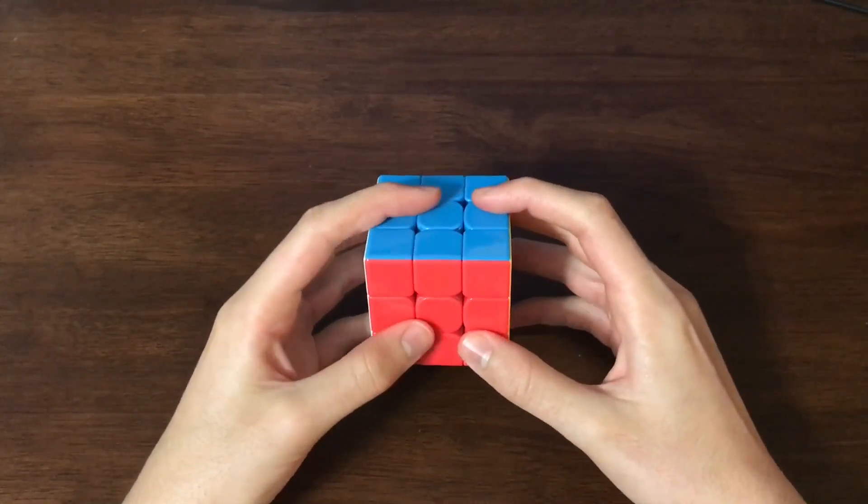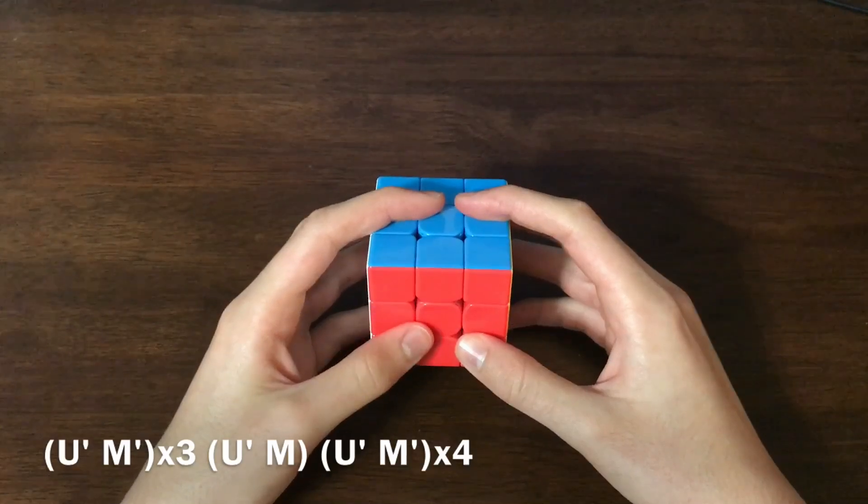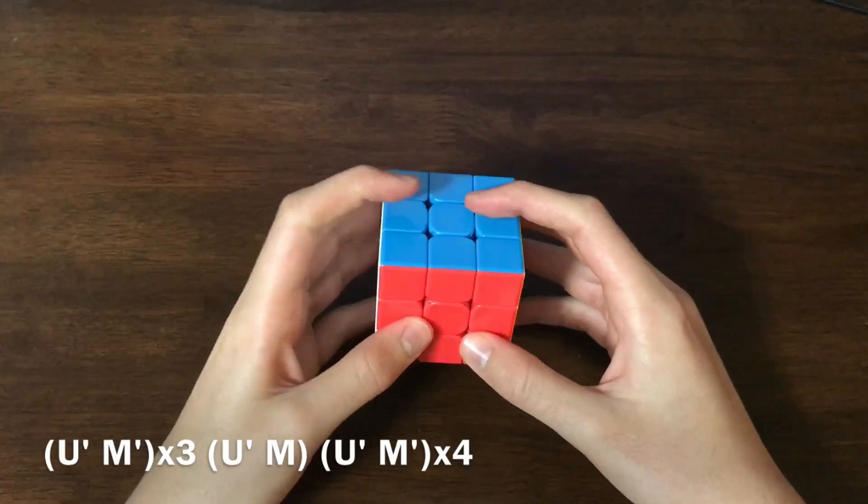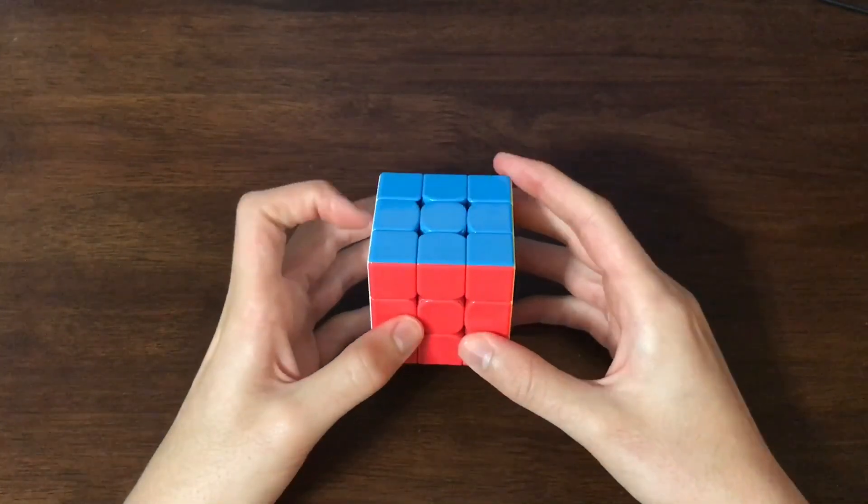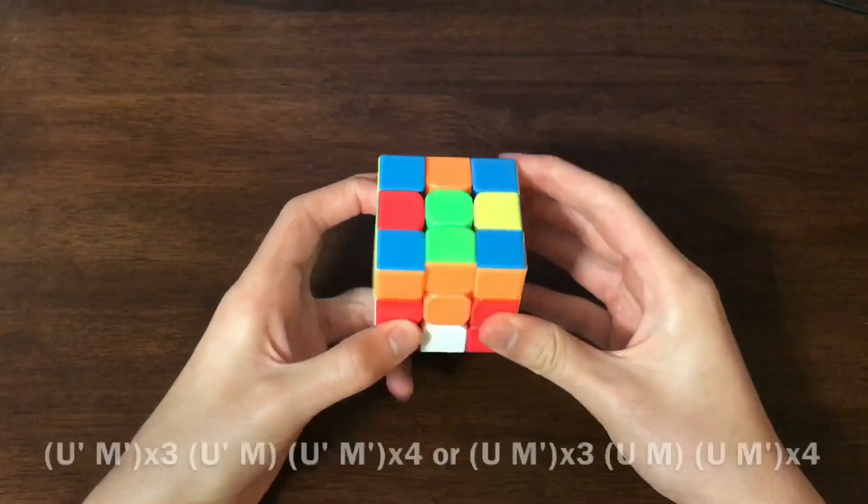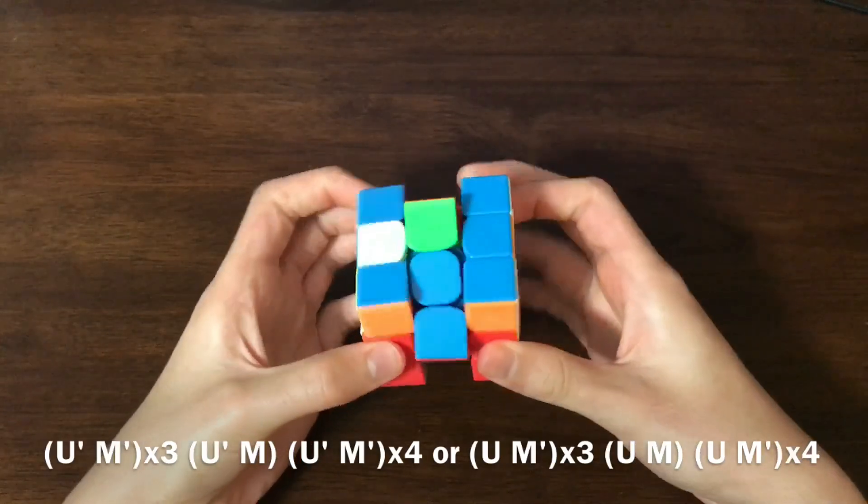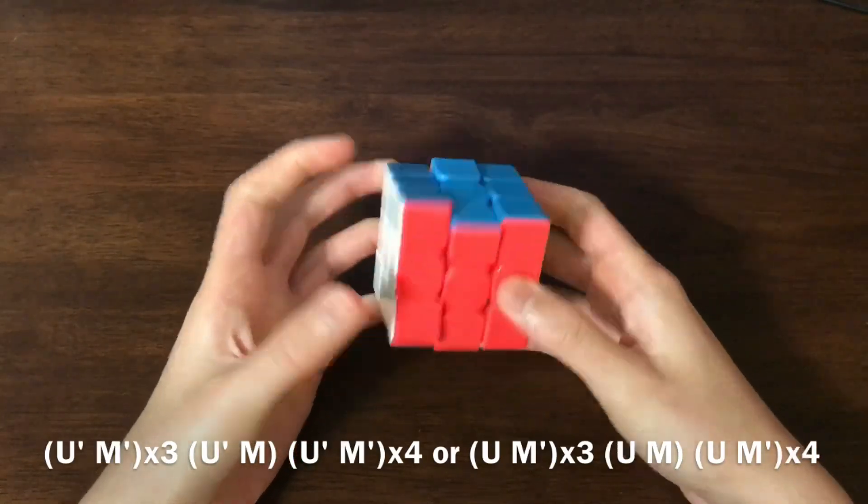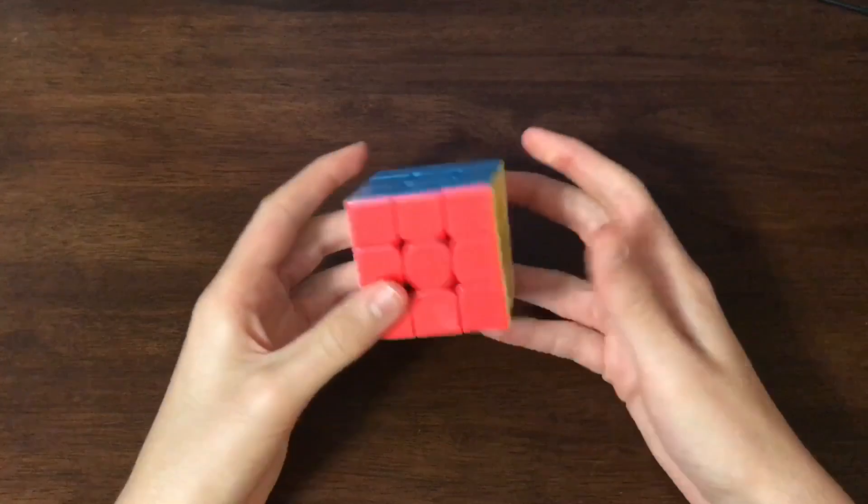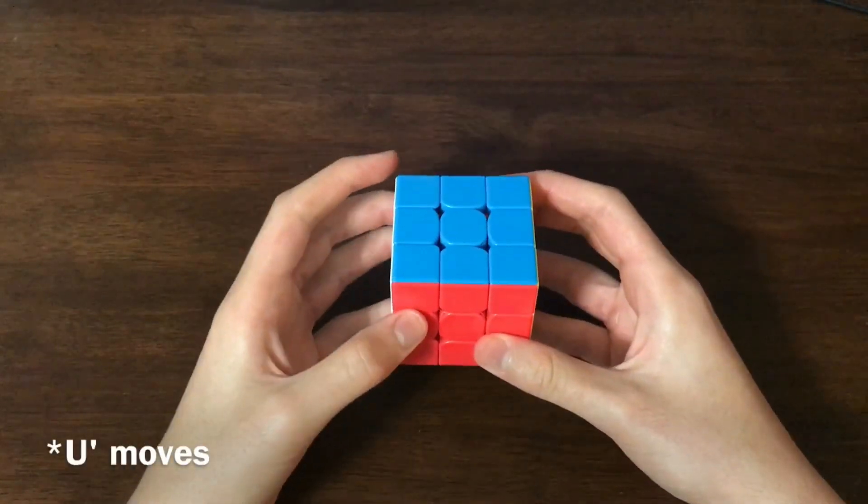which is much faster than having to do all those B moves, and R2s, and stuff like that. So this is also a very easy alg to memorize, because you can see it's just a U prime, M prime, three times, and then U prime, M, and then U prime, M prime, another four times. And if you don't like doing U prime, you can also do U, it will work just as well. You can see those are the same alg. I do U prime, because I do M moves in my right hand, so I can have my left hand free to do the U moves.